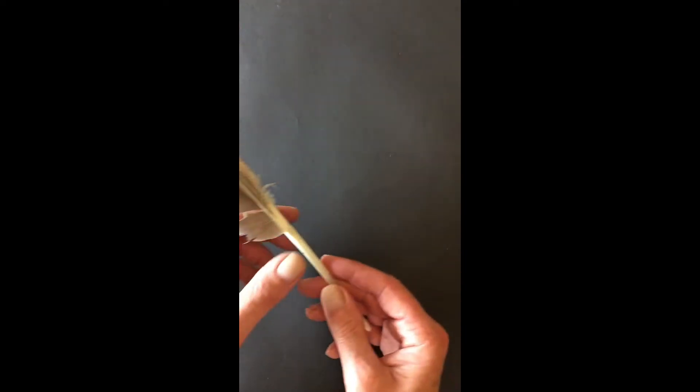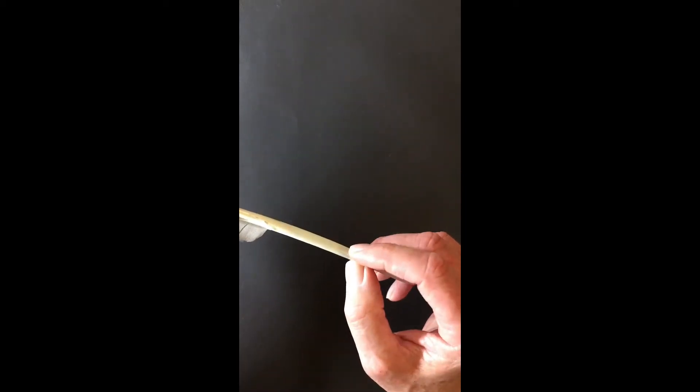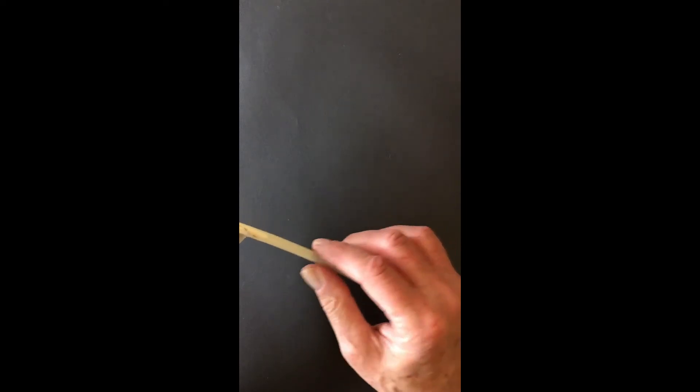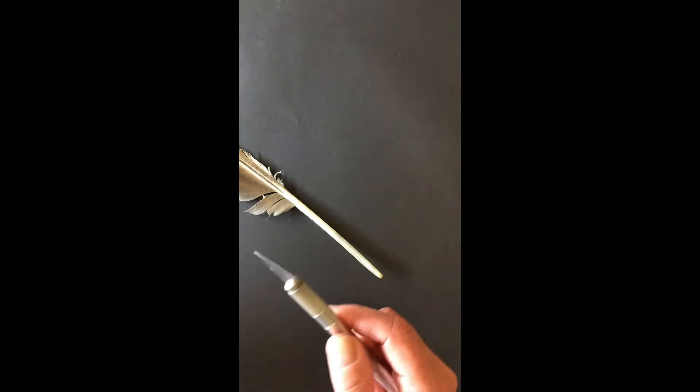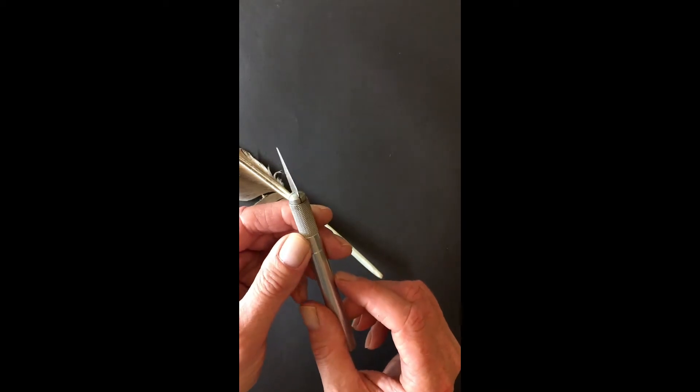The great thing about the goose feathers is that they're quite sturdy, quite hard, and the nib therefore will last a little bit longer. They are a little bit more difficult to cut, so it's always a good idea to have a really good sharp craft knife like this. I've actually sharpened this one this morning, so I'm not going to touch it.